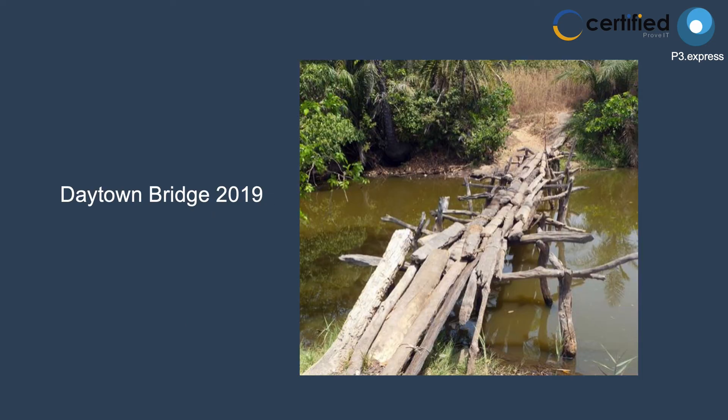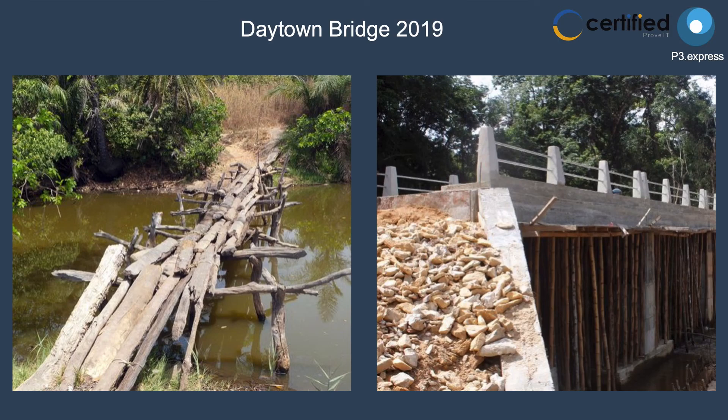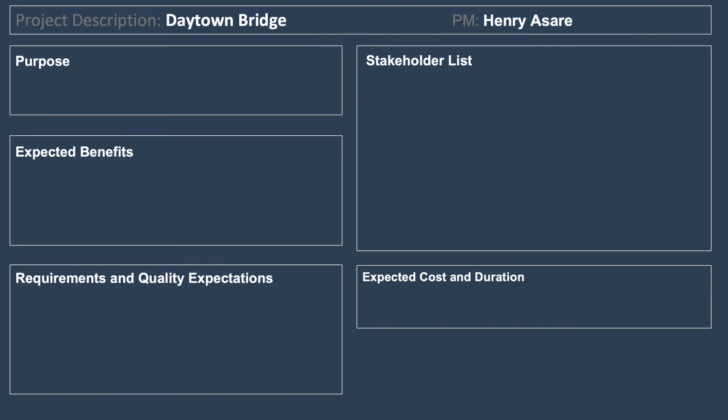The goal of the project was to build a bridge and replace the existing one — let's say the Daytime Bridge from 2019 — which didn't look great, especially when the rainy season comes. On the right is what we wanted to end up with: a bridge that would support two cars and make it easier for people to access the local village, Daytime Village.